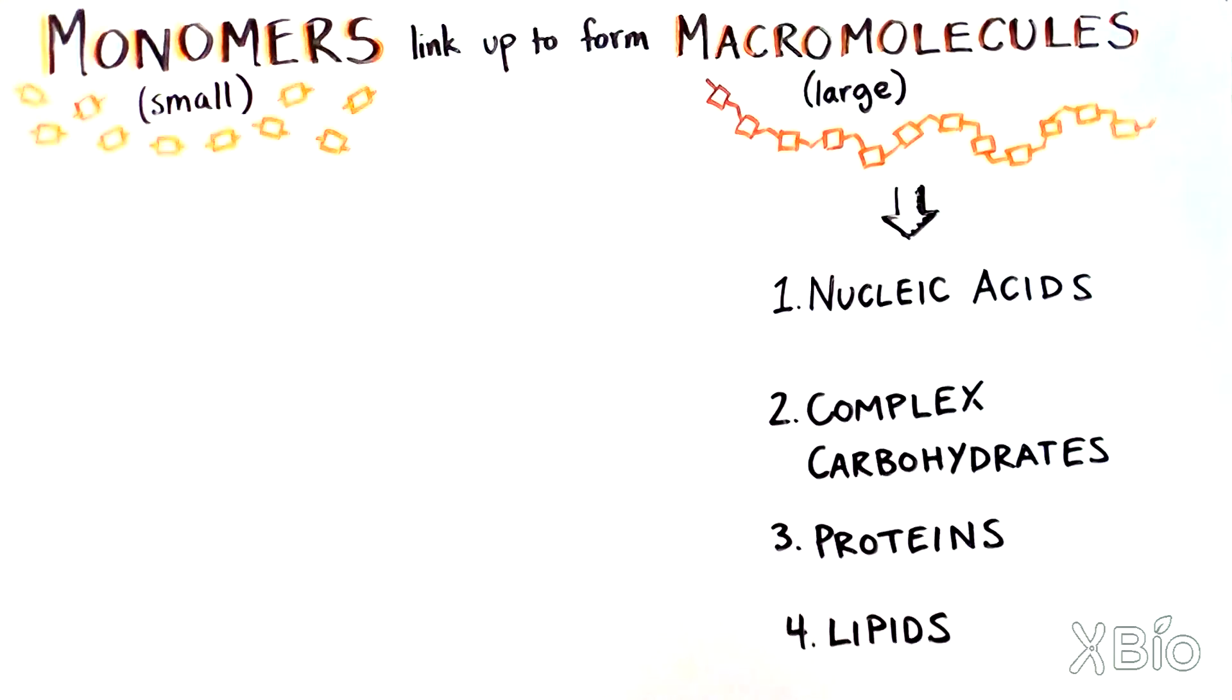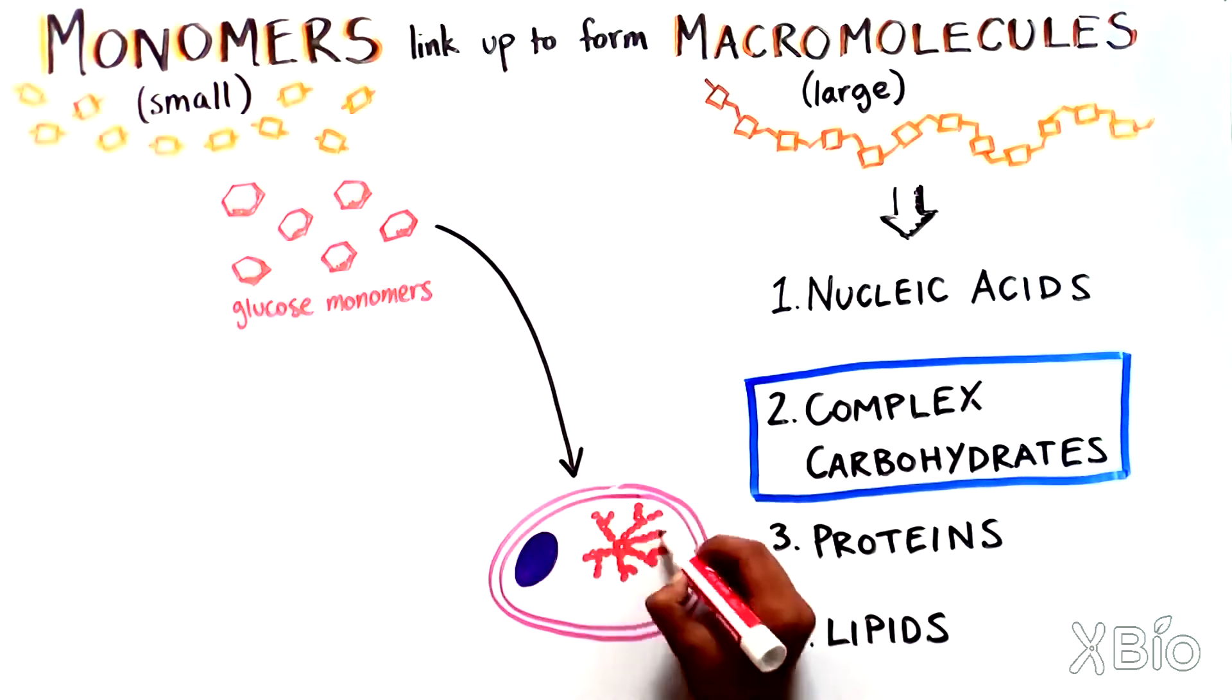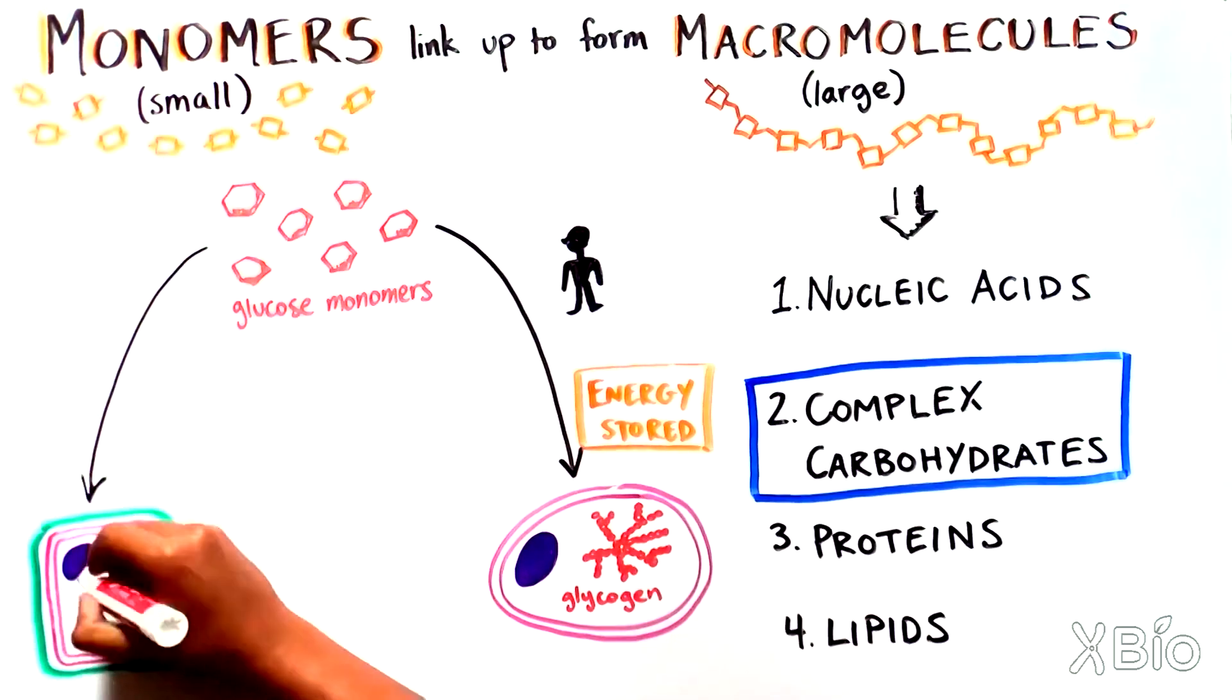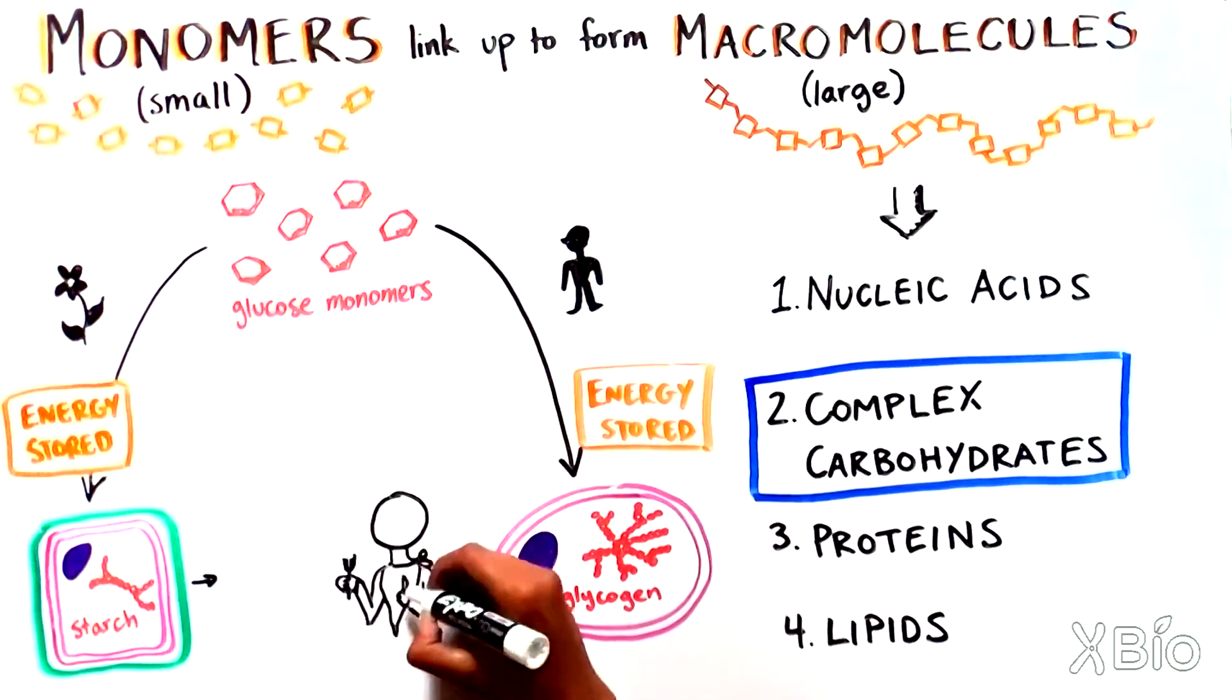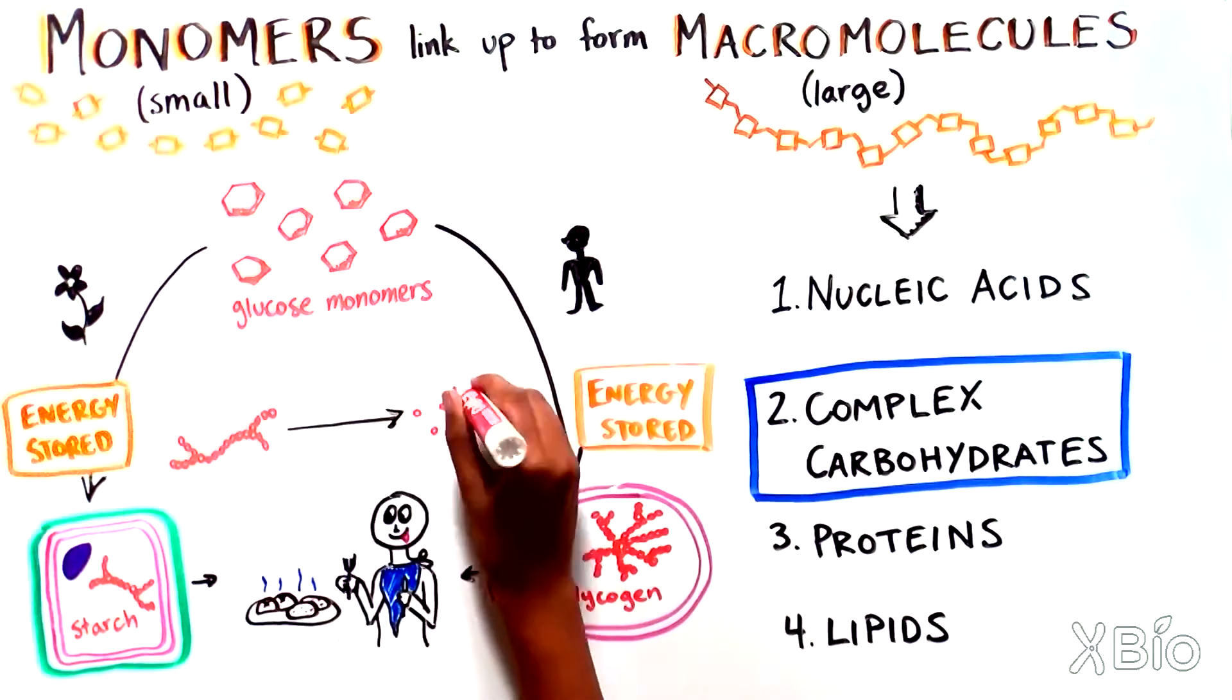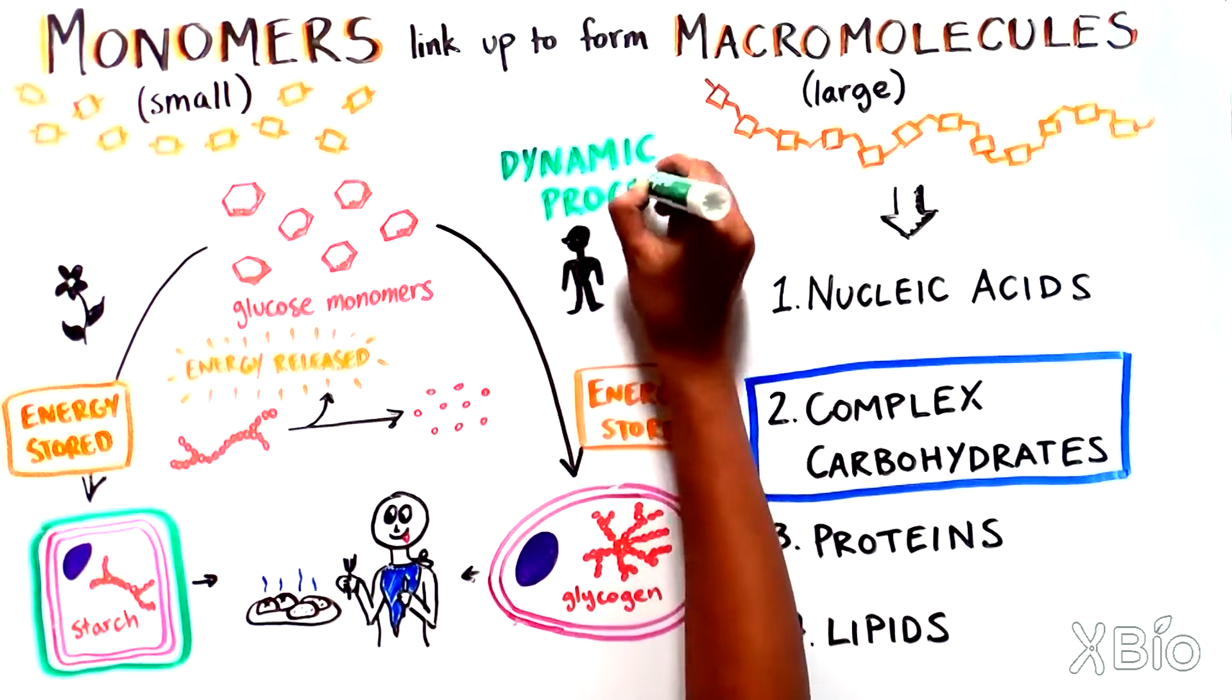Let's move on to sugars. Our cells take the simple sugars, like glucose, from our food and build them into complex carbohydrates that can be stored. Human cells store carbohydrates as glycogen, plant cells as starch. We can also directly take in complex carbohydrates from our diet. These are abundant in foods like bread and potatoes. Those get broken down and then are either directly used for energy or are built back up into glycogen for long-term storage. The process is dynamic.